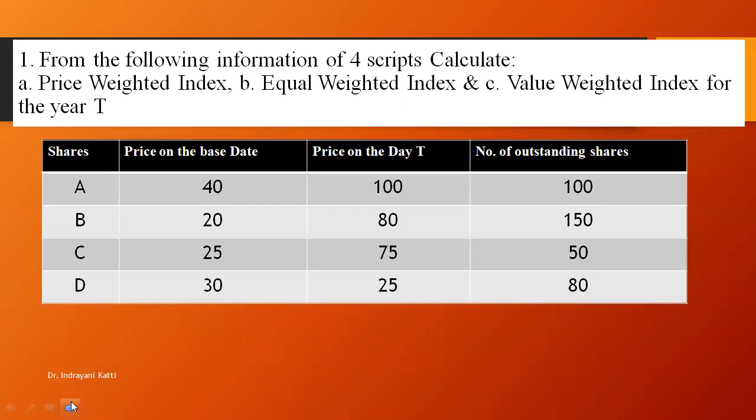Let me go through the problem. From the following information of four scripts which are taken for the calculation of indices, we need to calculate: the first one, price weighted index; the second one, equal weighted index; and the third one, value weighted index. This third one, value weighted index, is also called as market capitalization index. Here in the table, this information is provided to you.